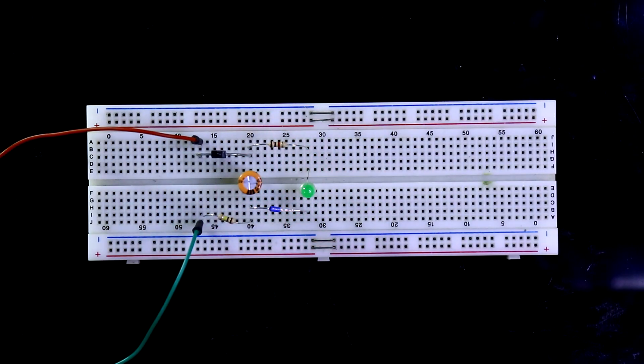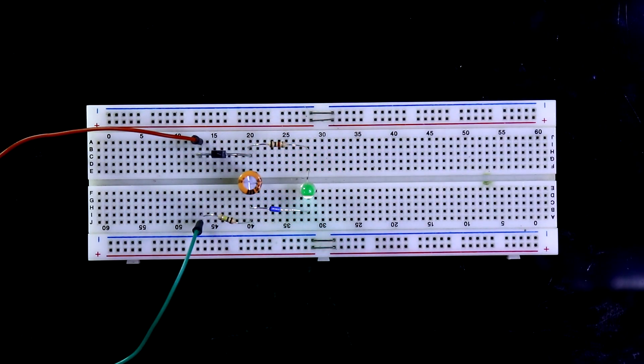In this video we are going to see how to make a circuit to blink an LED from 220 volt AC.